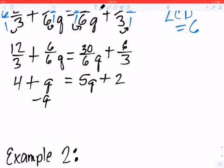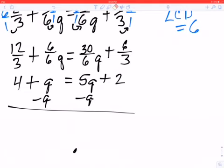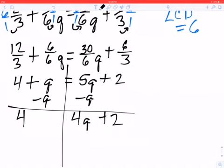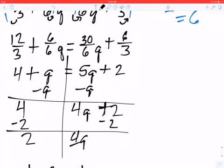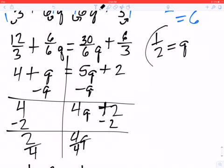I'm going to cancel out the Q by subtracting a Q from both sides. That leaves me with 4 on the left side, and 4Q plus 2 on the right side. Then subtract 2 from both sides: 2 equals 4Q. And then I divide both sides by 4 — 2 divided by 4 ends up being one-half. So I'm pretty sure that Q equals one-half.